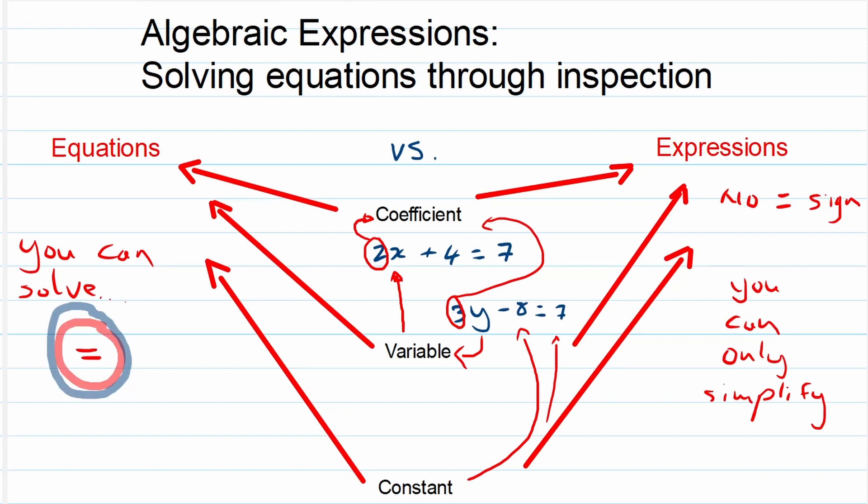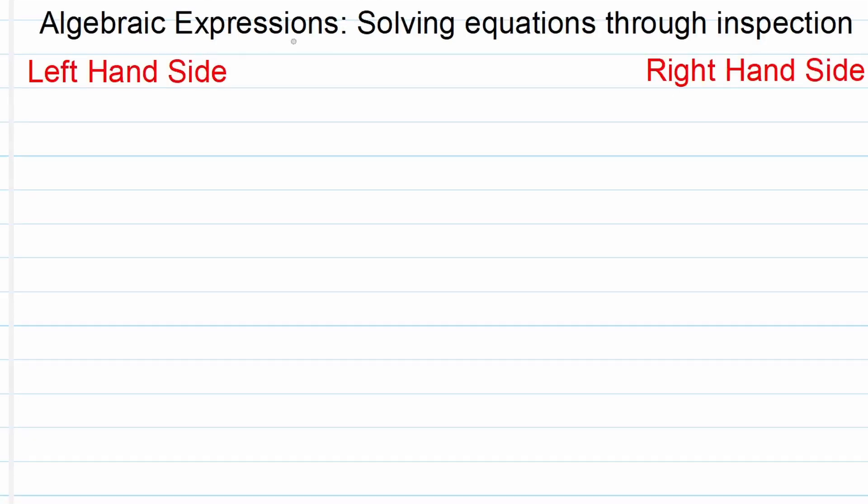Now that we've cleared that up, let's move on to solving equations through inspection. We've got a left hand side and a right hand side. And in between those two you'll have an equal to sign. Remember now, we are working with equations now. We are not working with expressions. So what we want to do if we solve it through inspection.